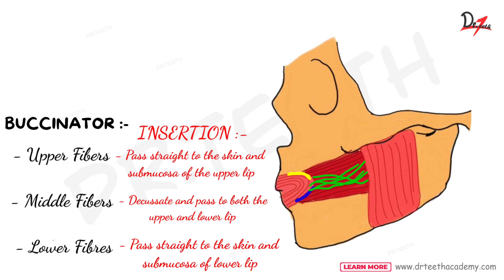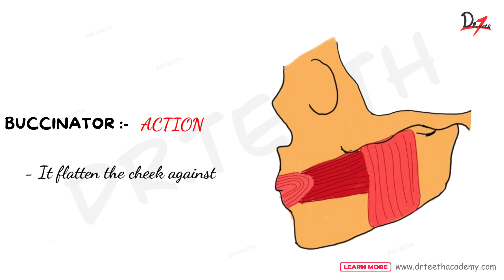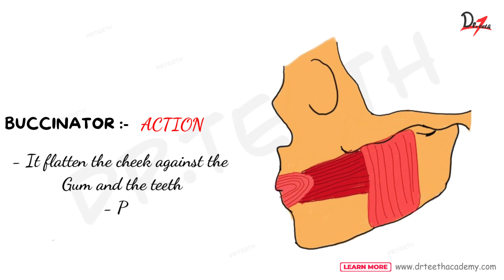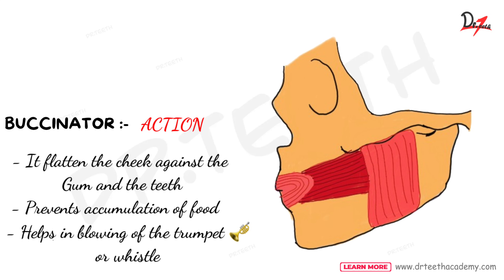The buccinator is supplied by the buccal branch of the facial nerve. Its action is to flatten the cheek against the gum and the teeth. It also prevents accumulation of food in the mouth by pushing food outside the vestibule, and it also helps in blowing a trumpet or whistle.